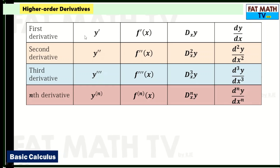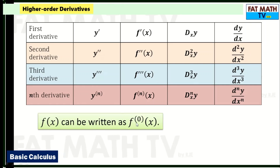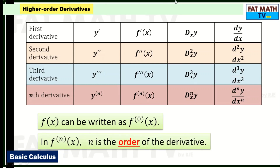Here are four different notations for the first derivative: y prime, f prime of x, d-sub-x y, and dy over dx. For the second derivative we have corresponding notations, and so on. In f⁽ⁿ⁾(x), n is the order of the derivative — order one for the first derivative, order two for the second, order three for the third, and order n for the nth derivative.